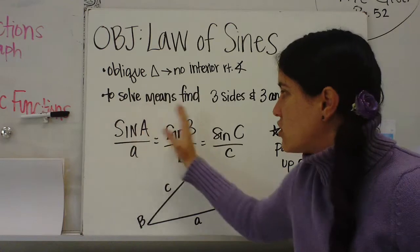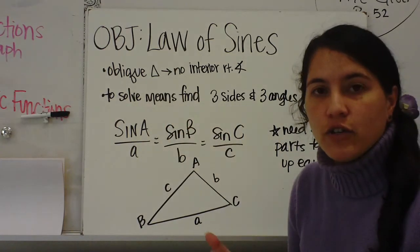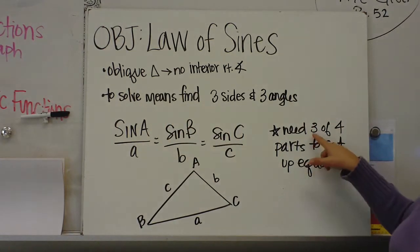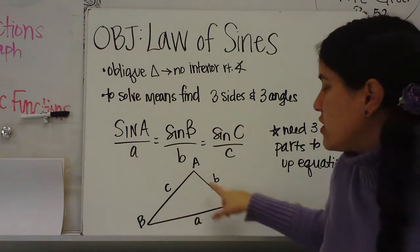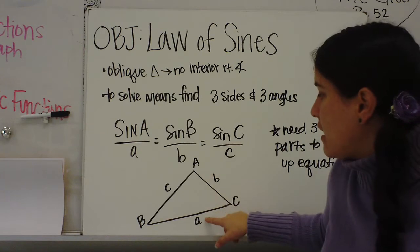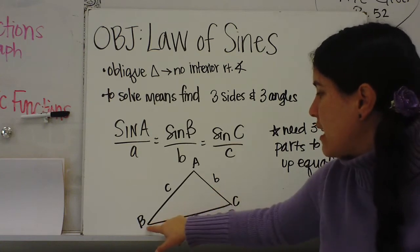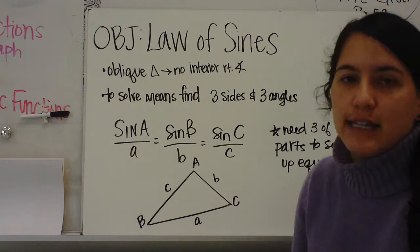To solve, you need three of the four parts. You need three of the four parts to set up the equation. So here is an example: A is across from a, B is across from b, and angle C is across from side c.